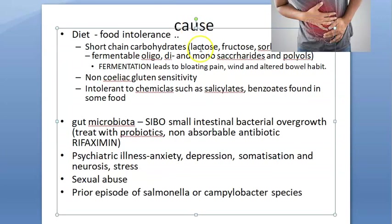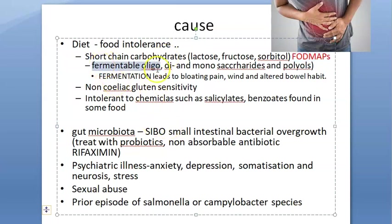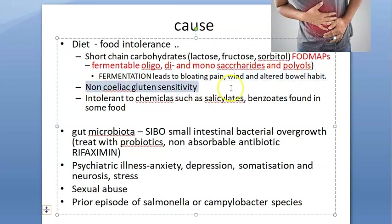What causes the bowel to get irritated? One cause is intolerant foods — specifically short-chain carbohydrates such as lactose, fructose, and sorbitol. These are called FODMAPs, which stands for fermentable oligosaccharides, disaccharides, monosaccharides, and polyols. FODMAPs can irritate the gut; they get fermented and lead to bloating.